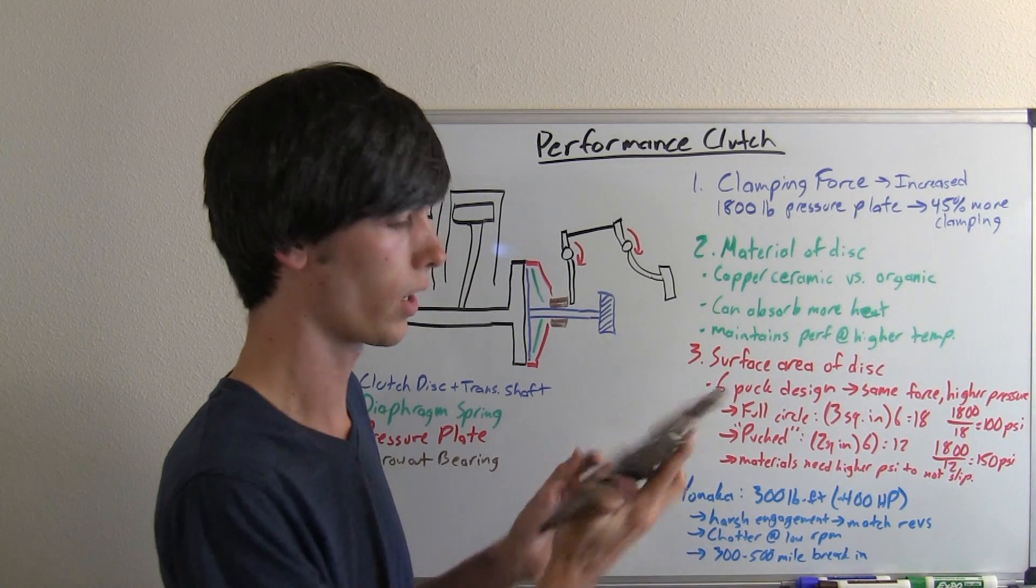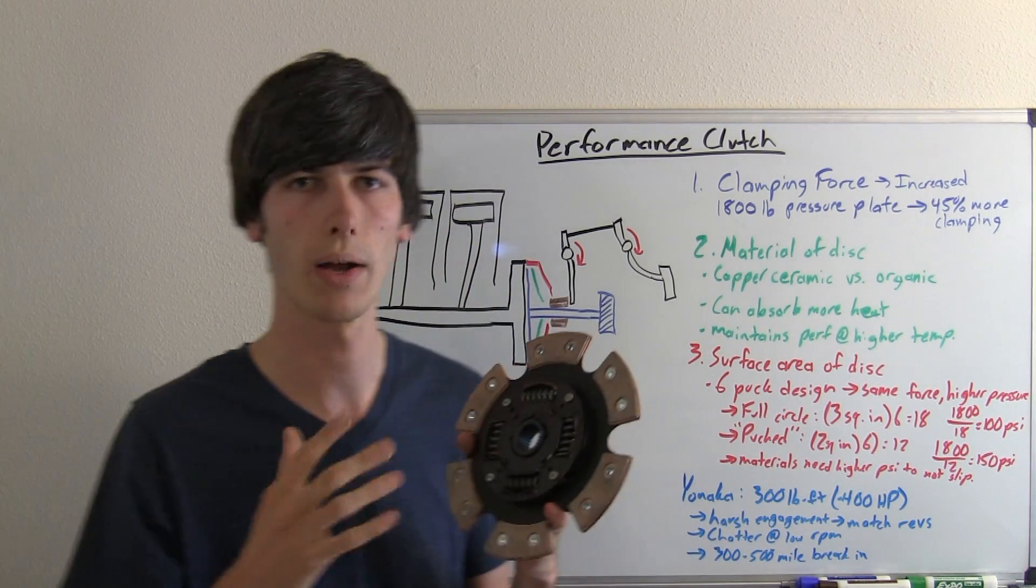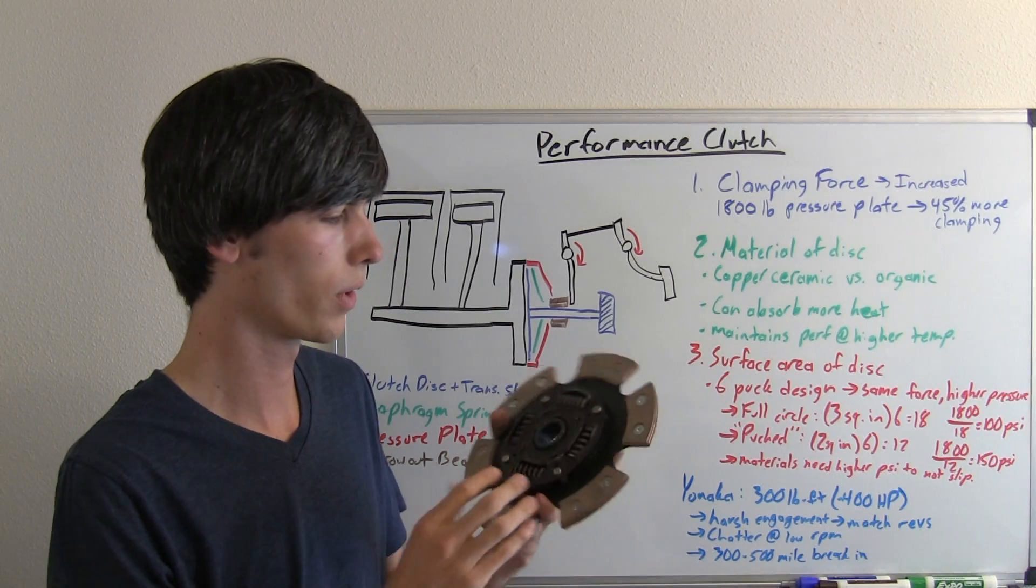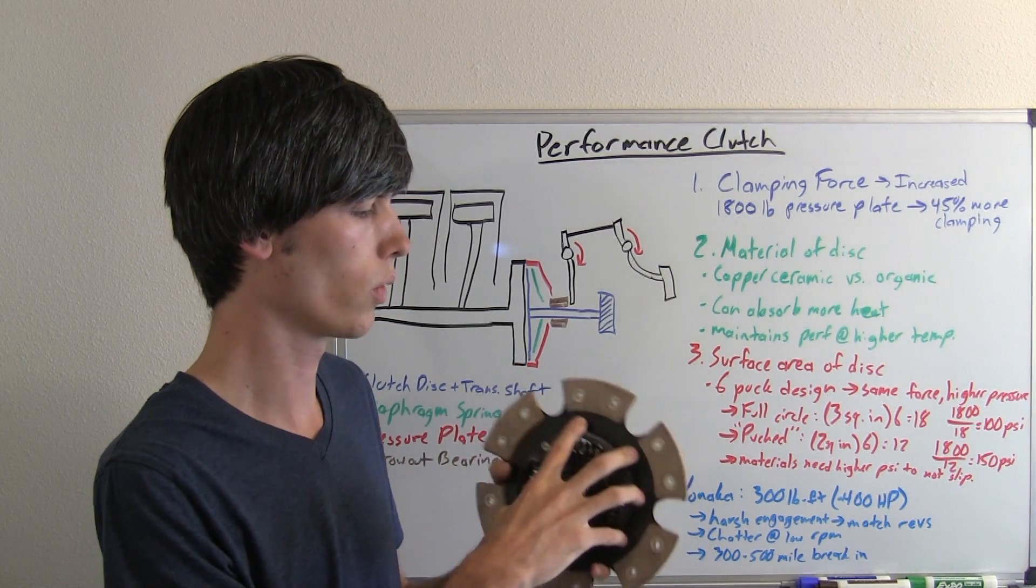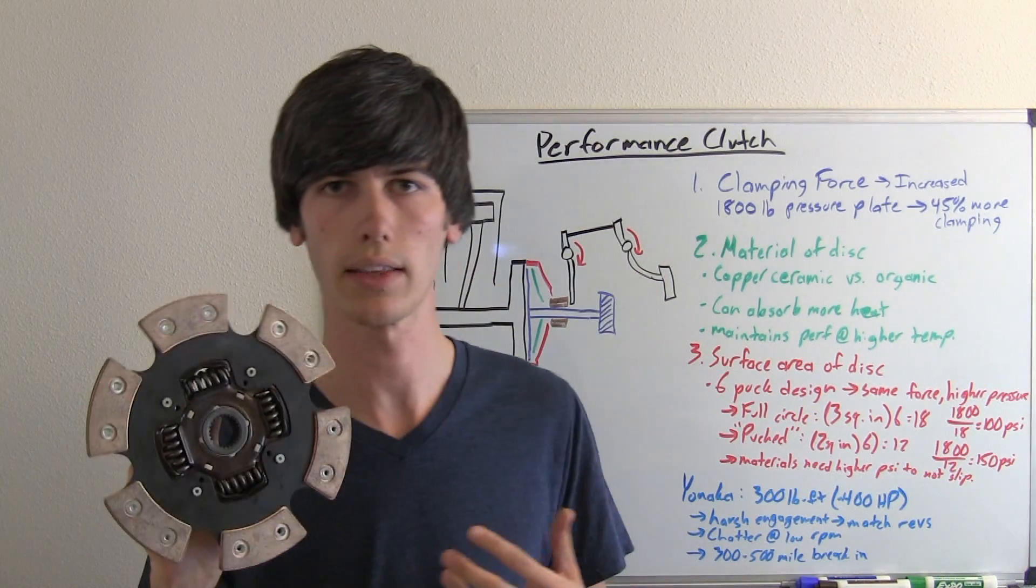So one of the things, basically this Yonaka performance clutch is rated to about 300 pound feet of torque and also it's good for about 400 horsepower. Now when you do replace a typical clutch with one like this, a performance clutch,